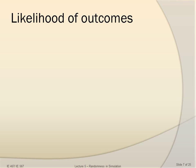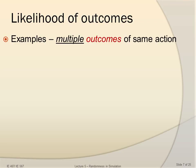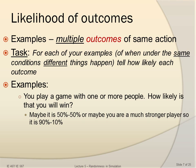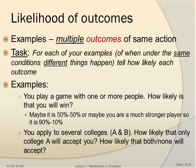It is important to discuss the likelihood of outcomes. We could have multiple outcomes of the same action. For each of your examples, tell how likely each outcome is. For example, you play a game — how likely is it that you'll win? It could be 50-50 if both players are equally matched, or maybe 90% and 10% if you're a much stronger player. You apply to colleges A and B — how likely is it that only college A will accept you? How likely that both or none will accept?